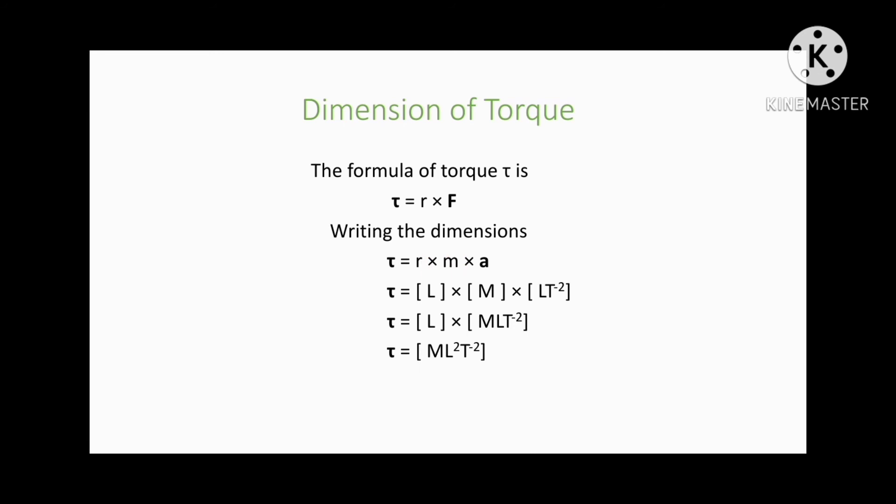...the next step, we shall write τ is equal to [L] multiplied by [M][L][T⁻²]. We got [M][L][T⁻²] by multiplying [M] with [L][T⁻²]. In the next step, we shall write τ is equal to [M][L²][T⁻²]. We got this by multiplying [L] by [M][L][T⁻²].